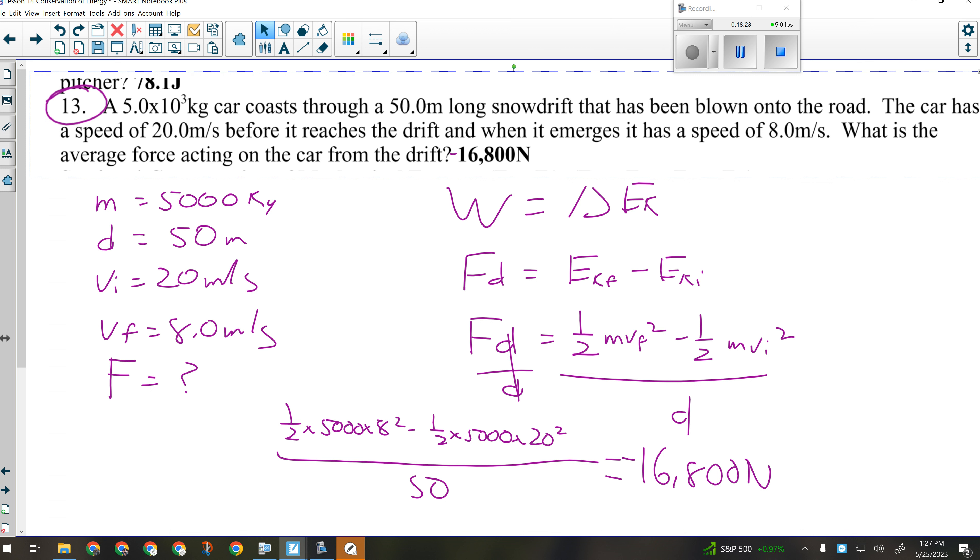And so, if you got a negative number, you did it right. It was supposed to be negative. If you didn't, you got positive 16,800. It's because you switched the two speeds. All right. Tomorrow, efficiency. Monday, unit exam review. Tuesday, lab. Wednesday.